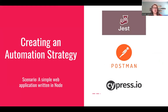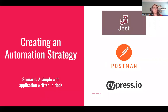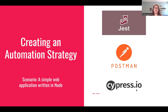Now that we've gone through all eight spokes of the wheel, let's talk about how to create an automation strategy. We'll imagine a simple scenario: a web application written in Node — an address book that lets you add, delete, and update contacts. There's a web UI for user interaction and also an API. When a user clicks a button to add a new contact, that calls the API, which calls the database and adds the new record. We'll create an automation strategy using three tools: Jest, Postman, and Cypress IO.